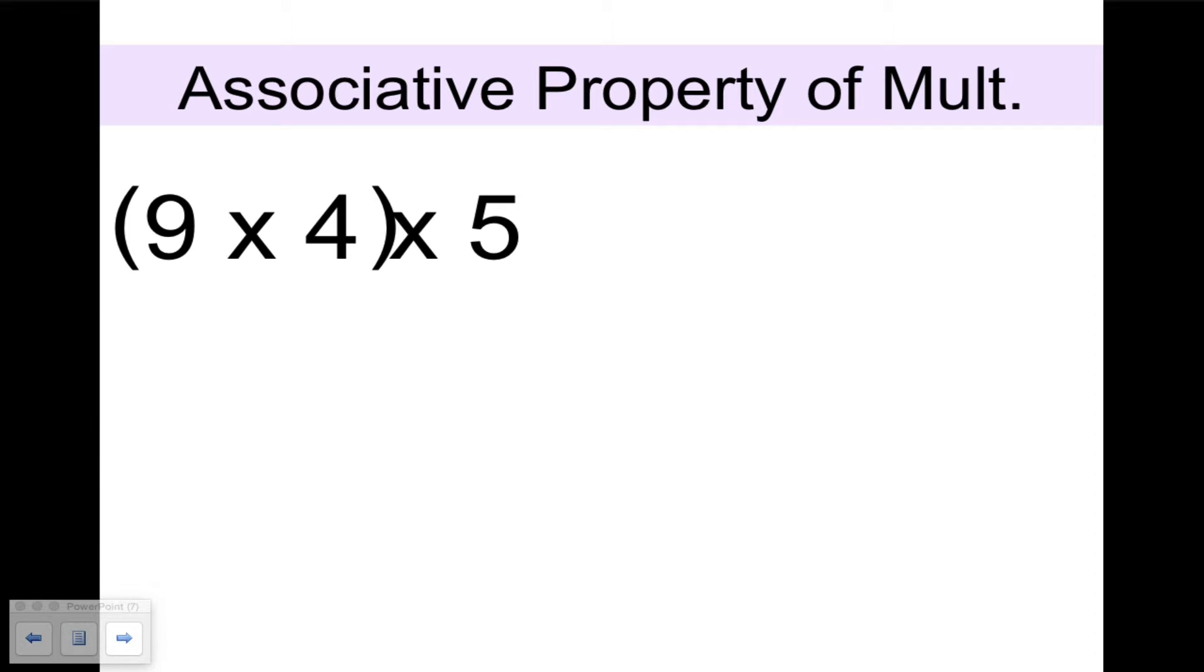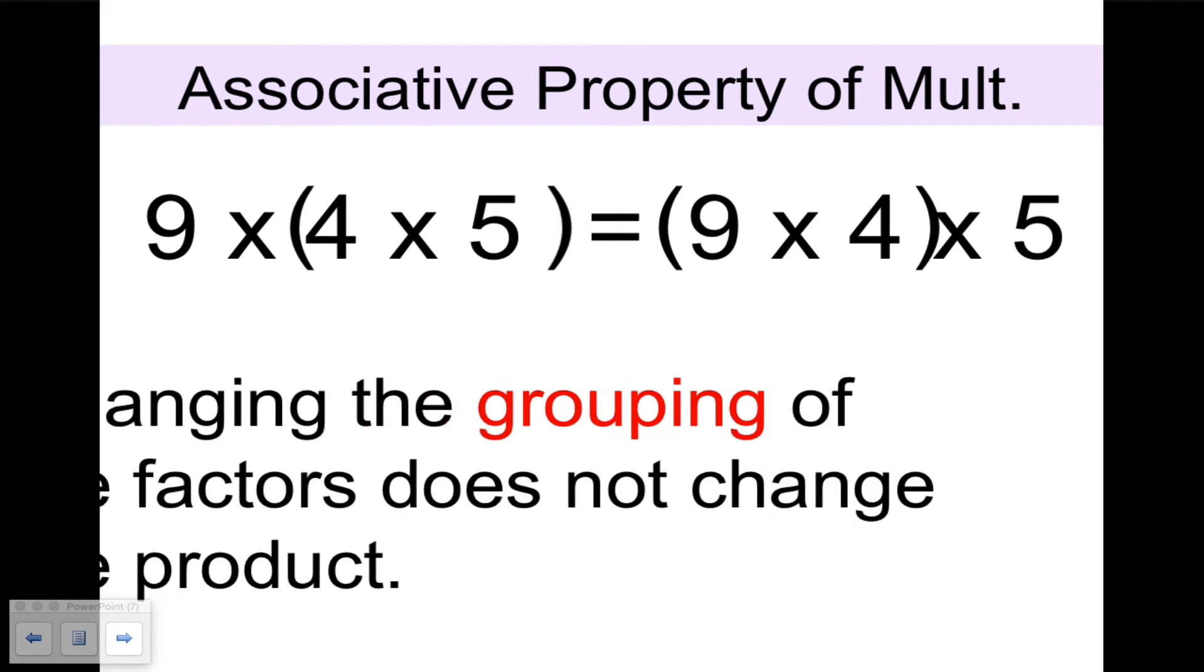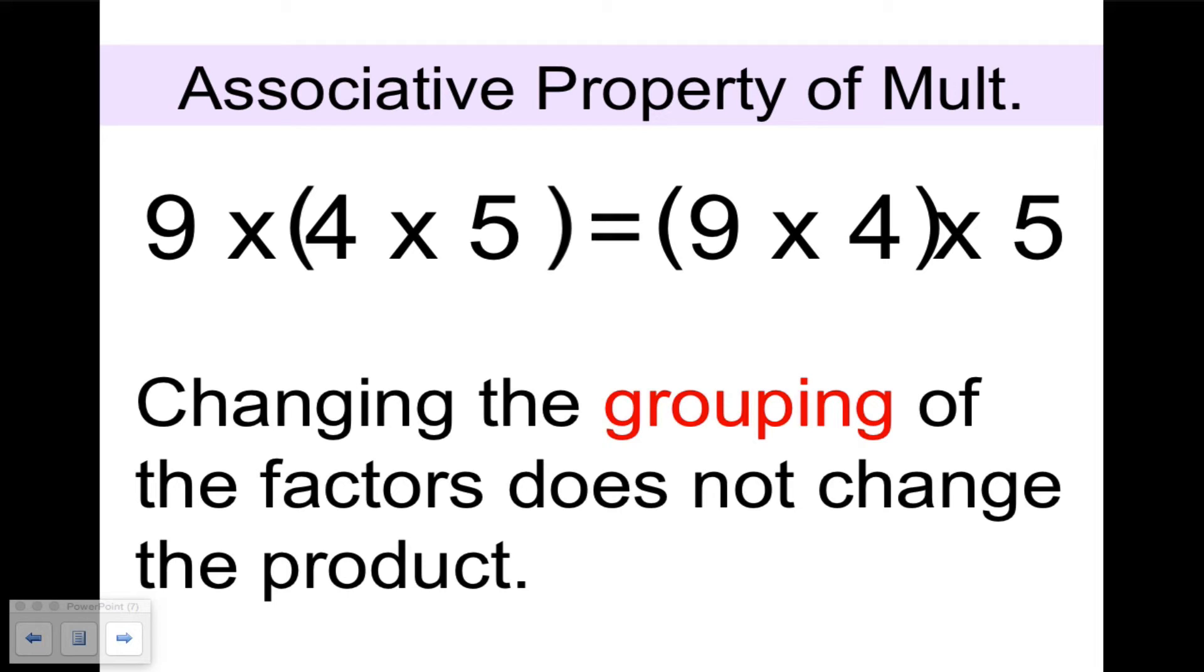Next, the associative property of multiplication tells us that 9 times 4, which is 36, times 5 equals 9 times 4 times 5, which is 20, times 9—180. For me, it's easier to do it that second way, to multiply 4 times 5 first. The associative property allows you to regroup numbers for multiplication in ways that are easier for you. Changing the grouping of the factors does not change the product.